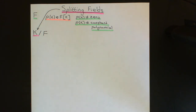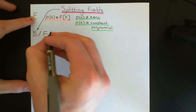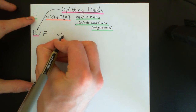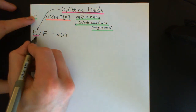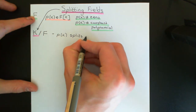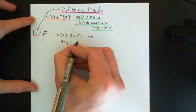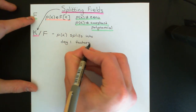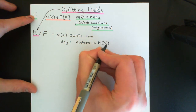This needs to be a special field extension of capital F, though. It needs to obey two important properties. Property number one is that the polynomial P of X splits into degree one polynomials completely in the ring of polynomials over the splitting field, capital K — where you've got coefficients from the splitting field, capital K.